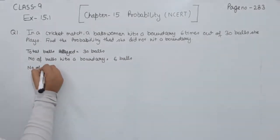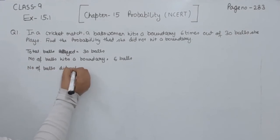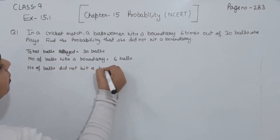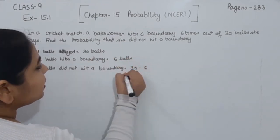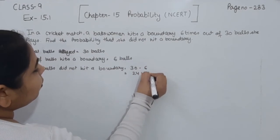Now, we are going to find the number of balls did not hit a boundary. So, the total we are having 30 minus 6. So, we are having 24 balls.